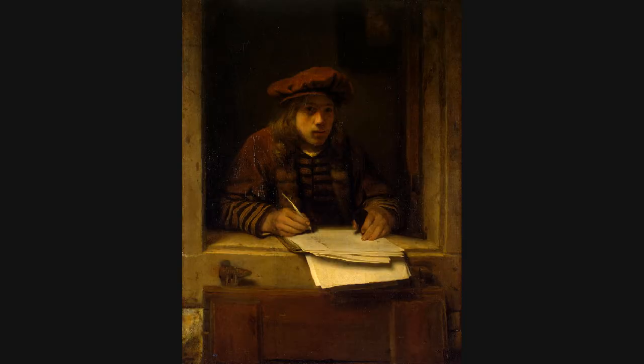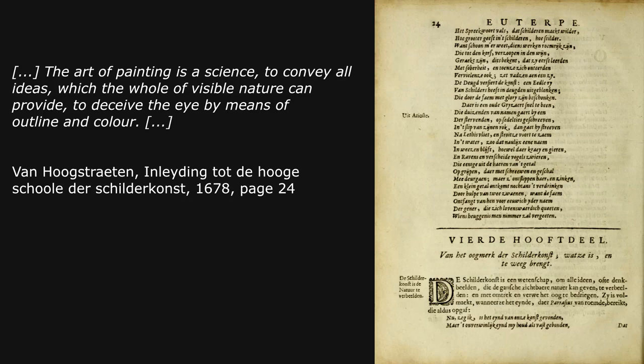When we talk about the art of painting, it is good to have a good definition, something to work from. In several of those books there were definitions given about what painting is — the basic definition of the art of painting. This is what Samuel van Hoogstraten, a student of Rembrandt, wrote in his book published in 1678: 'The art of painting is a science to convey all ideas which the whole of visible nature can provide, to deceive the eye by means of outline and color.'